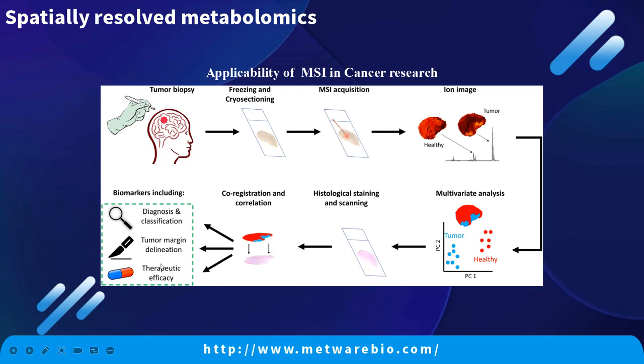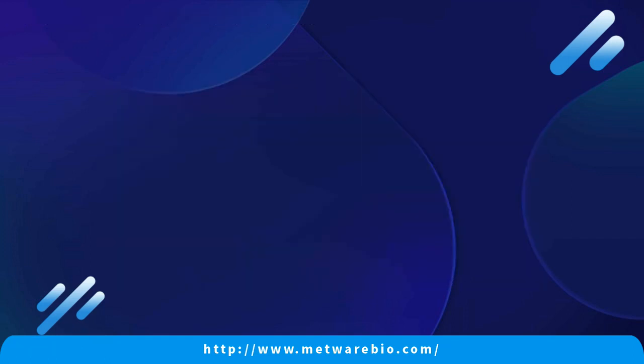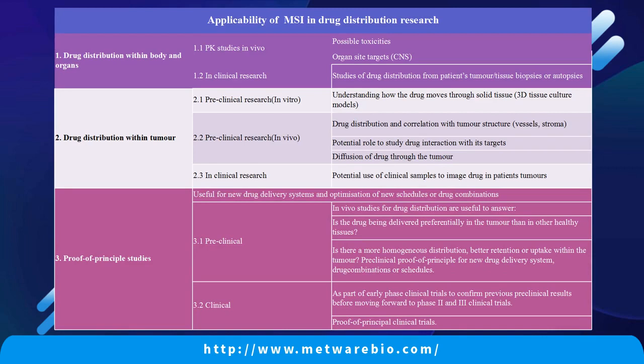Spatially resolved metabolomics is also widely used in pharmacokinetics. Failure to treat disease or cancer may be due, at least in part, to drugs not being administered at high enough concentrations or distributed evenly enough to reach the appropriate site of the tumor or disease. To understand whether a drug is being adequately delivered, precision pharmacology techniques are needed. Spatially resolved metabolomics allows imaging of drug distribution in tissues, characterizing the distribution of anti-cancer or anti-disease drugs in vivo. Clinically, it is possible to determine the optimal dosage, timing, combination, and delivery system for new drugs.